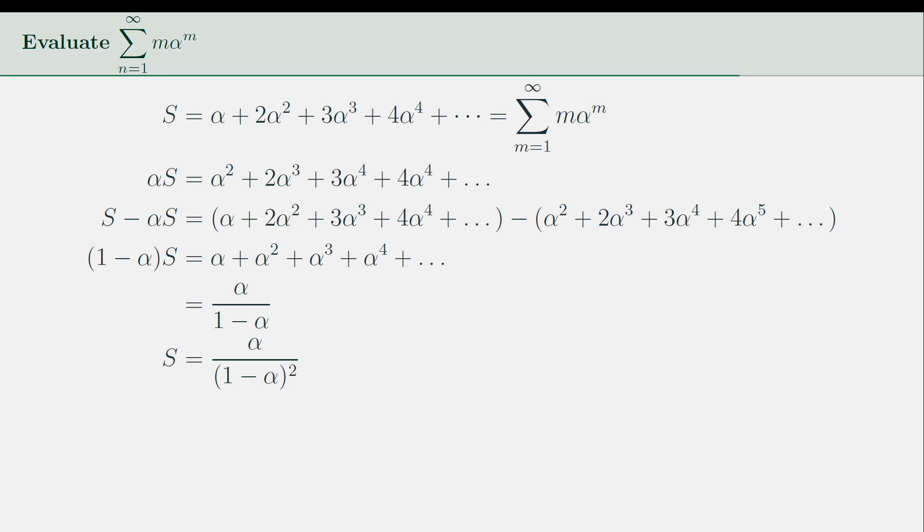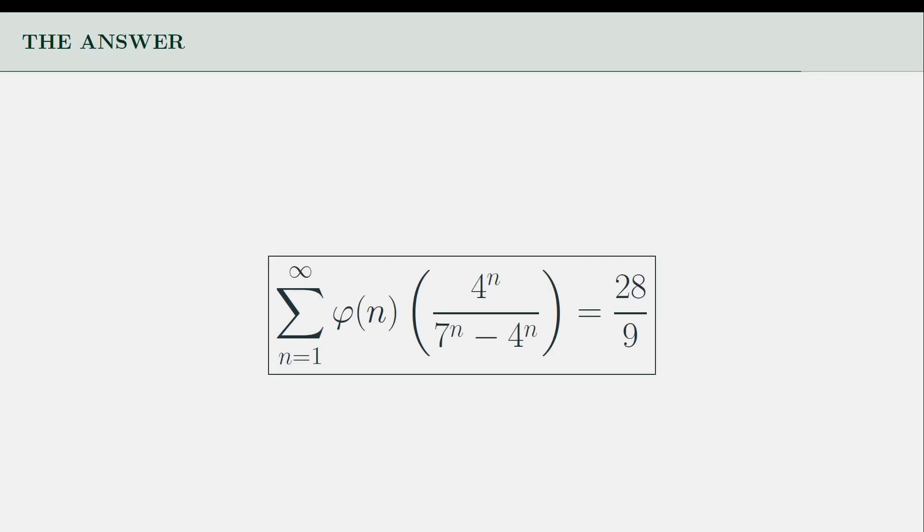Finally, we substitute α equals 4/7, which gives us the sum to be equal to 28/9. Therefore, the desired sum of that entire thing is 28/9.